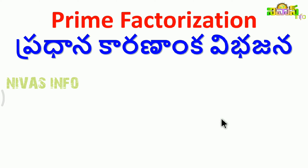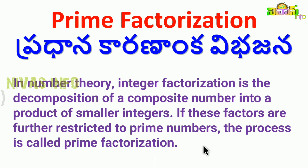The topic is prime factorization. What is prime factorization? A simple definition is important. In number theory, integer factorization is the decomposition of a composite number into a product of smaller integers. If these factors are further restricted to prime numbers, the process is called prime factorization.